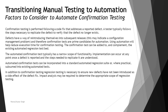Now considering the last aspect for automation while transitioning between manual testing to automation, one of the good candidates is confirmation testing. Confirmation testing is performed to follow code fixes — generally to check if the code fix has resolved the issue or not. A tester typically follows the steps necessary to replicate the defect to verify that the defect no longer exists.